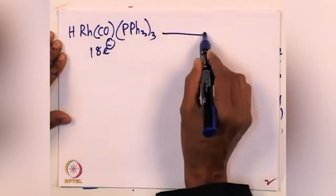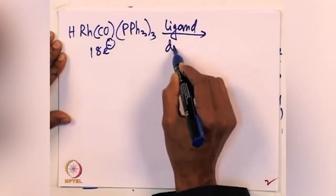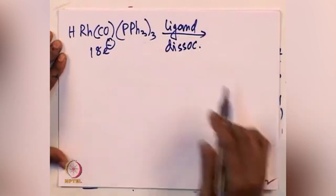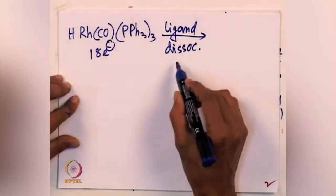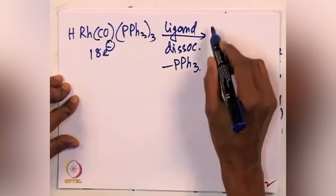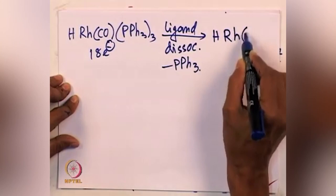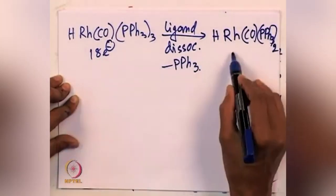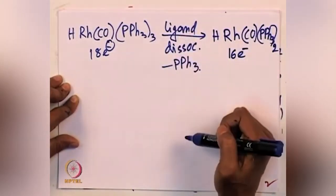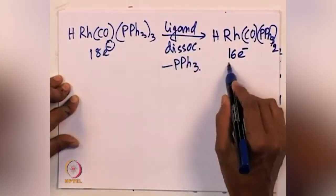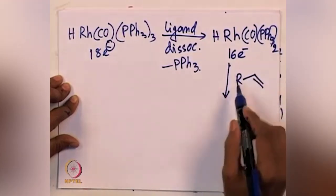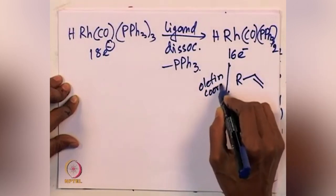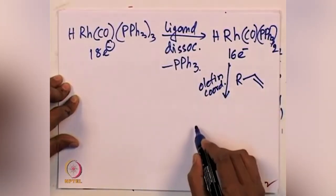This species first undergoes ligand dissociation. What we are looking at is the saturation of the olefin to give the alkane. The first step is ligand dissociation — the ligand that can dissociate pretty easily in this case is triphenylphosphine from the 18-electron complex, giving you a 16-electron complex. So 18-electron goes to 16-electron; one ligand dissociation occurs, which we have discussed earlier. First would be olefin coordination, then again ligand dissociation followed by olefin coordination.